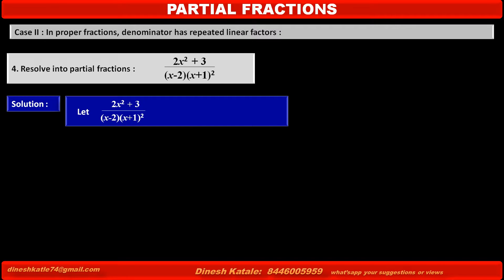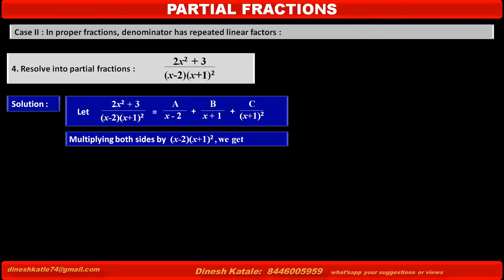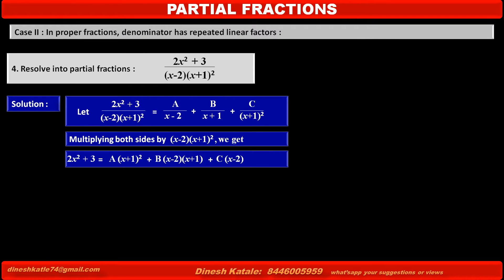The fraction is equal to A/(x - 2) for the single linear factor, plus B/(x + 1) plus C/(x + 1)² for the repeated linear factor. To remove the denominators of each term, we multiply both sides by the LCM of denominators, that is (x - 2)(x + 1)². We get: 2x² + 3 = A(x + 1)² + B(x - 2)(x + 1) + C(x - 2). Consider this as equation 1.